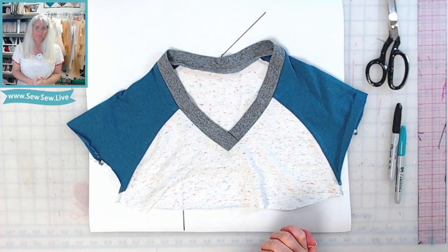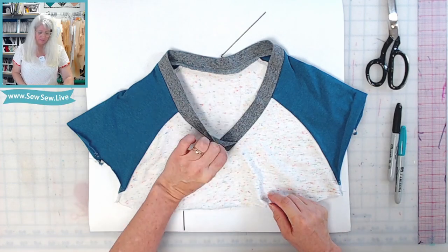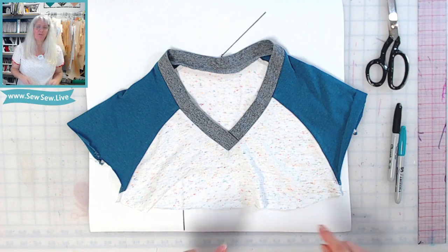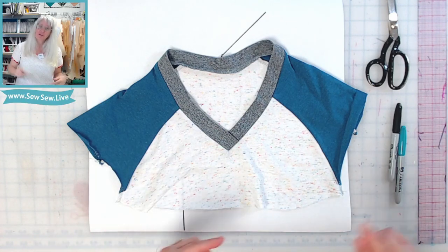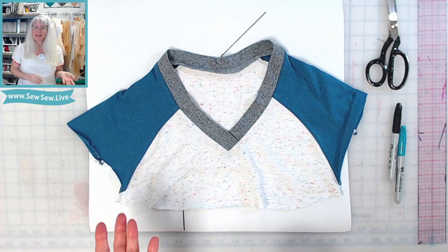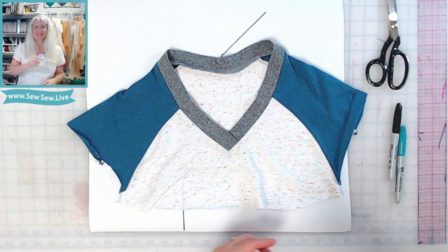Today I'm going to show you how to draft a neckband pattern for an overlapped v-neck just like this. If you're looking for one for a center seam v-neck, check the description. If you want to know how to sew either one of them, those videos are also linked in the description. Same if you want to draft a scoop neck tee neckband or you want to sew one, link in the description.